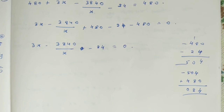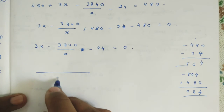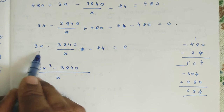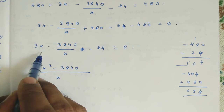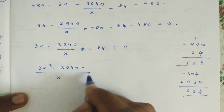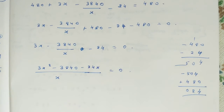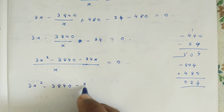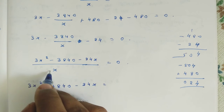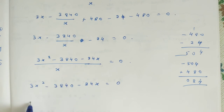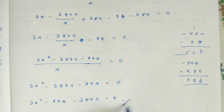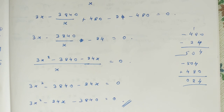Now we take x as the LCM. Multiplying through by x: 3x squared minus 3840 minus 24x equals 0. Rearranging: 3x squared minus 24x minus 3840 equals 0. We have now successfully represented the given situation in quadratic equation form.